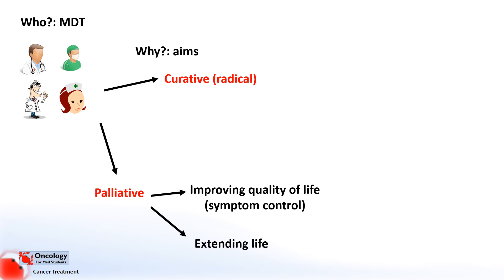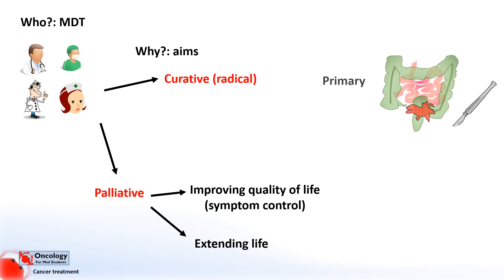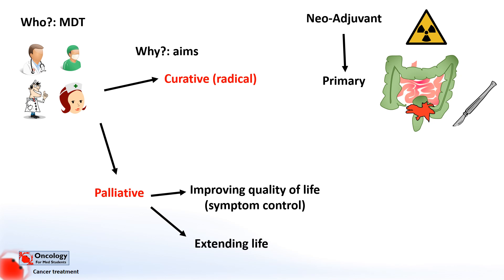Another important consideration in the approach to treatment is the order in which treatments are given. The terms usually describe when a treatment is given with reference to the main, or primary, treatment. Neoadjuvant means before the main treatment. For instance, if you were to plan to cut a tumour out with surgery, you might want to give some radiotherapy, or even chemotherapy, beforehand to try and shrink the tumour down so it's easier to cut out.